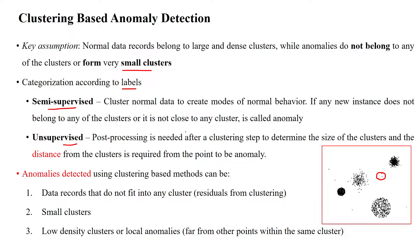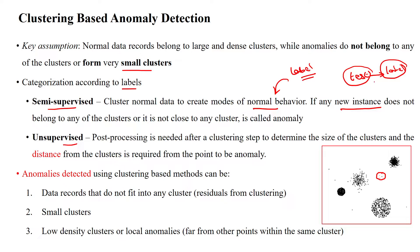In the semi-supervised approach, the normal data points will have labels and we can define the behavior of normal data points using those labels. When we get a new test data point, our model or algorithm will examine it. If its label is not found in the given dataset — if the label is not available — then that is called an anomaly. If the label matches with the given dataset labels, then it will be a normal data point.